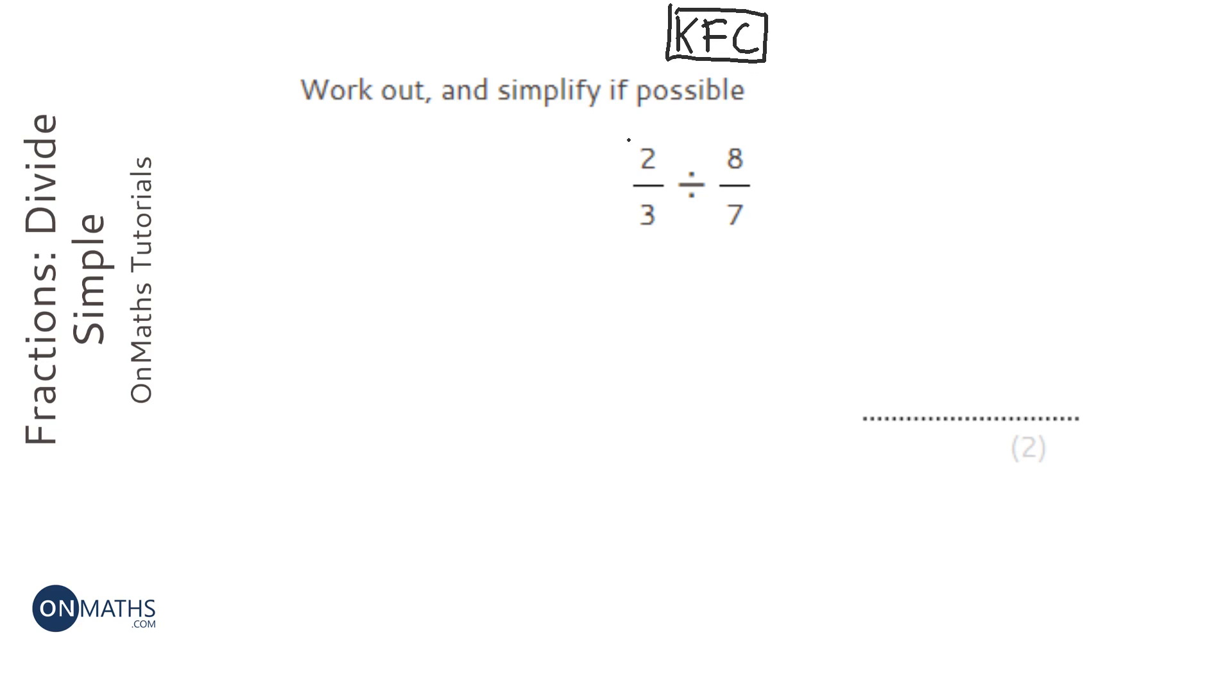The K means keep that first fraction the same. The F means flip that second fraction around, and the C means change that. So we're going to keep the first fraction.